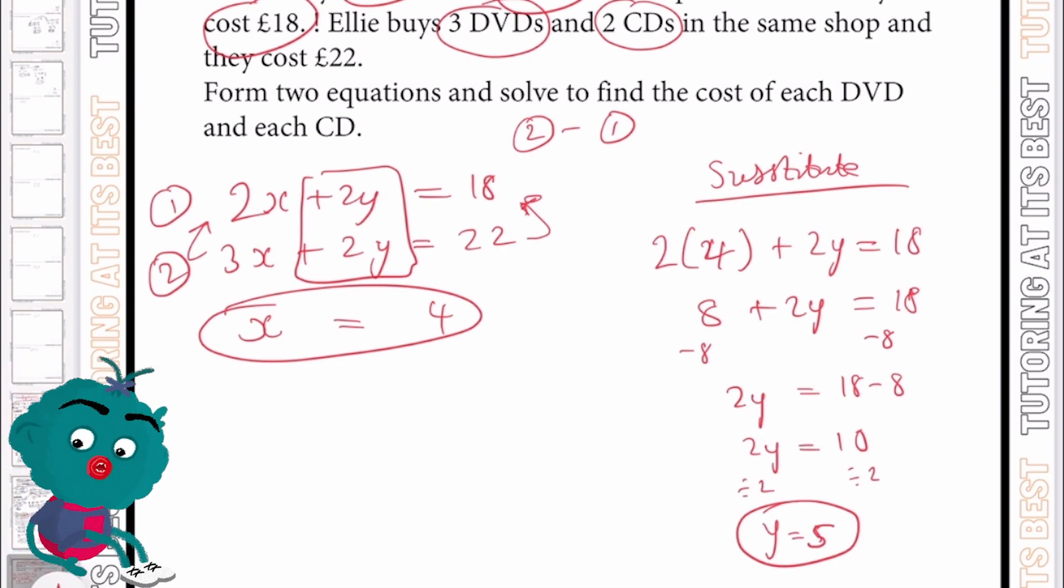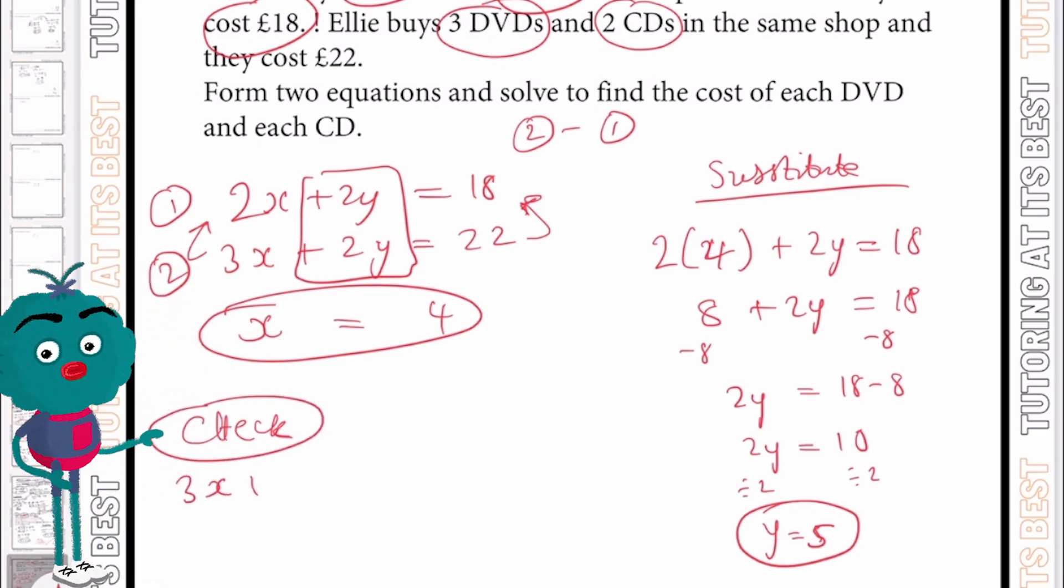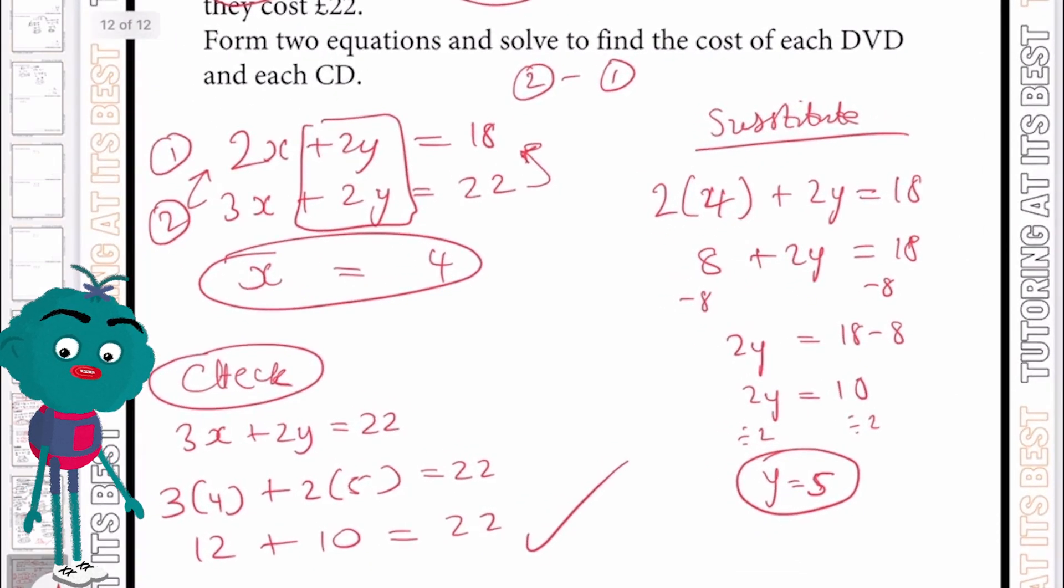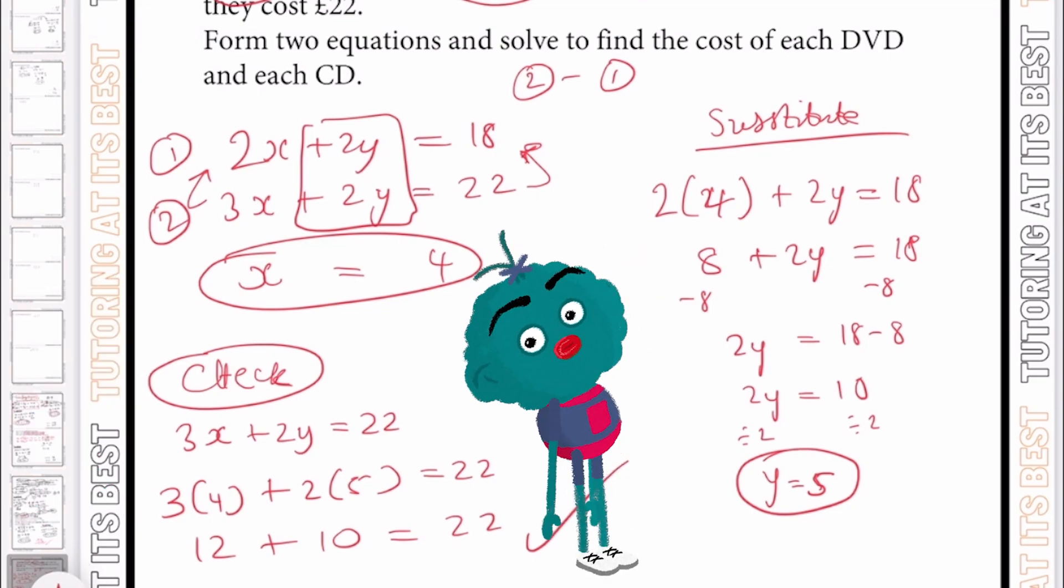Again, let's check this. So I'll simply check it with 3x plus 2y, which equals 22. So I know 3 times 4 plus 2 times 5 must equal 22, which is 12 plus 10. And it all checks out. And there we are. And that there brings us to the end of our part two of simultaneous equations.